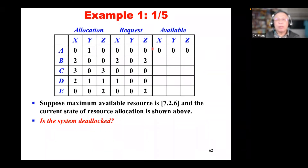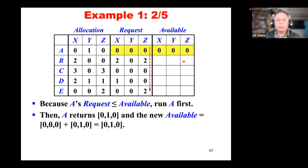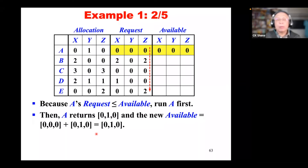Then for each process, we search the array to find an unfinished process and check whether its request is less than or equal to work. In step three, we try to find a process that is not yet finished and whose request is less than or equal to the current available. If no such process exists, go to step five. Otherwise, we pretend the allocation can be satisfied — we add that process's allocation to work, assuming the process would return everything, including allocated resources.